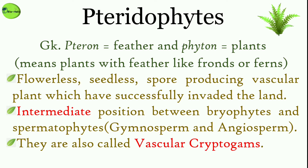The pteridophytes represent an intermediate position between the bryophytes and spermatophytes — that is, the gymnosperms and angiosperms. They were classified under the class Cryptogamia by Carolus Linnaeus in 1754, so they are also called vascular cryptogams. Now I will talk about the characteristic features of the pteridophytes.